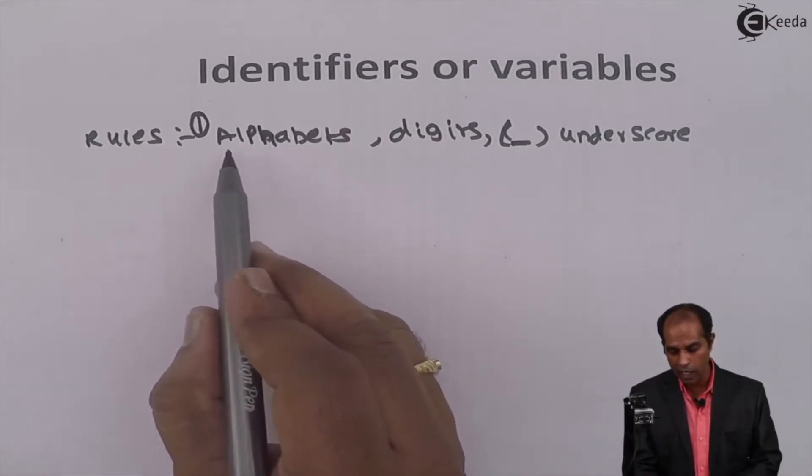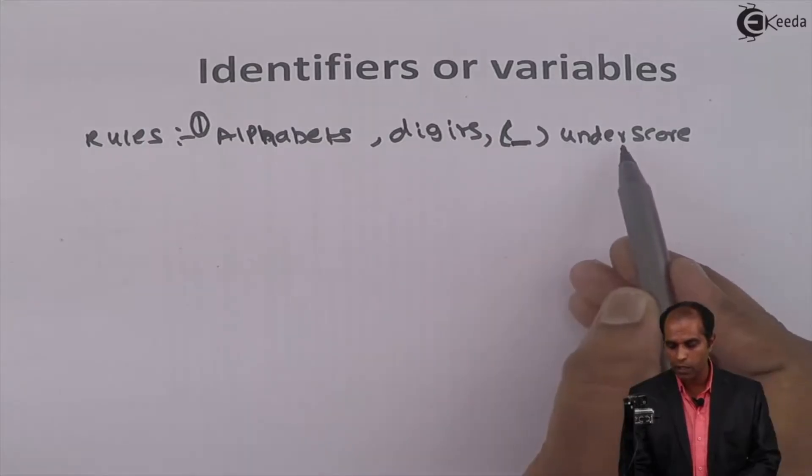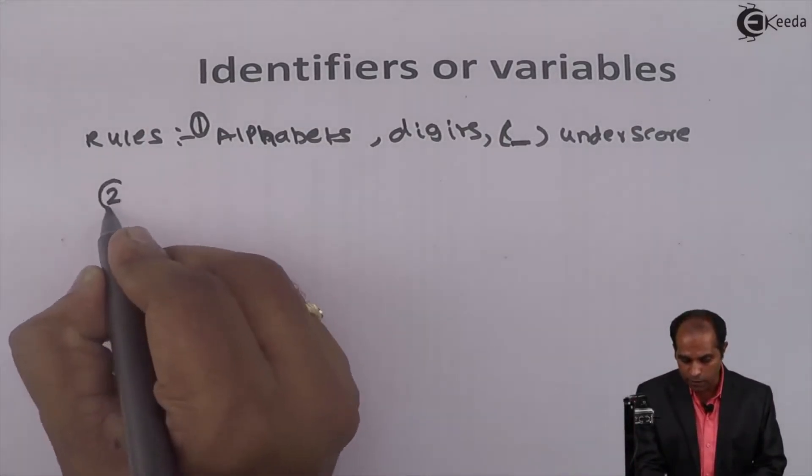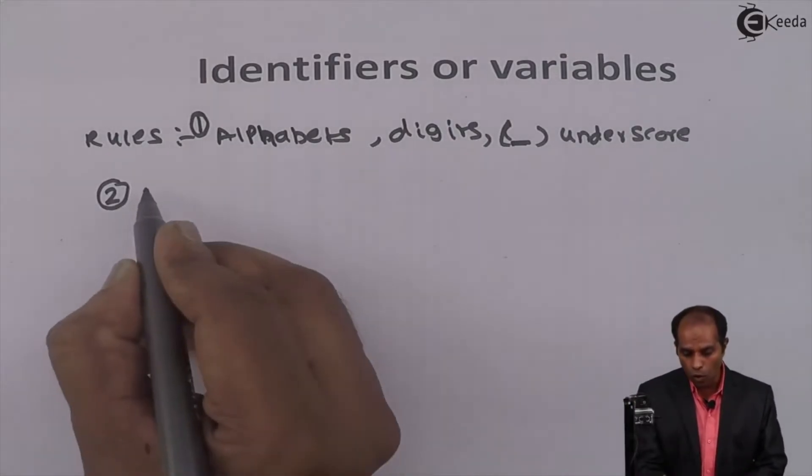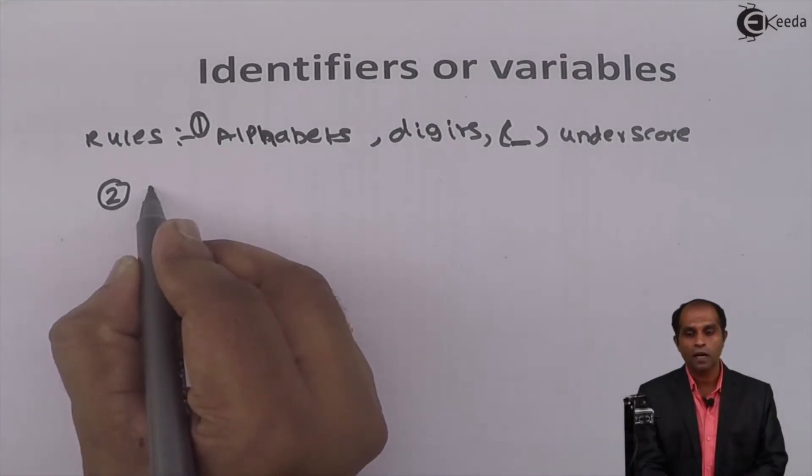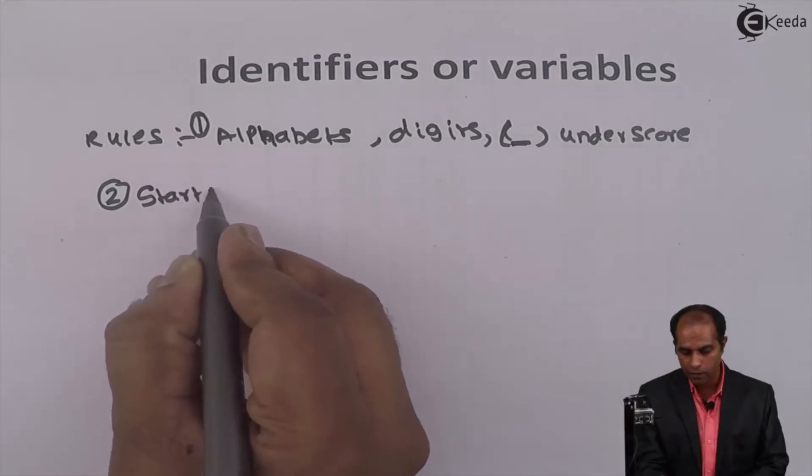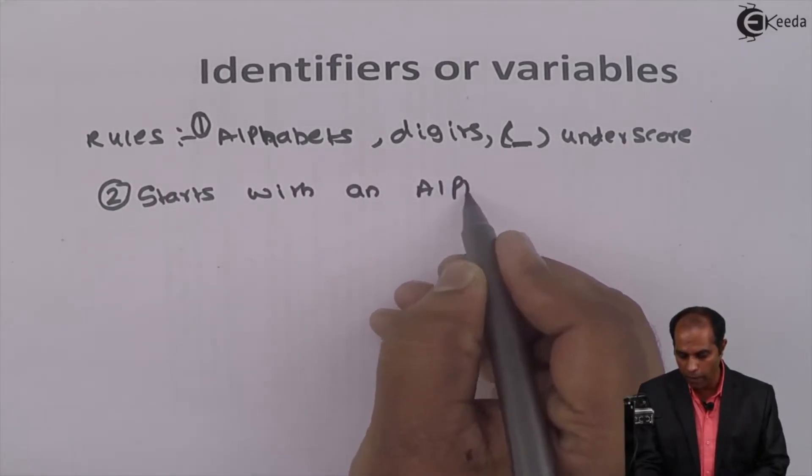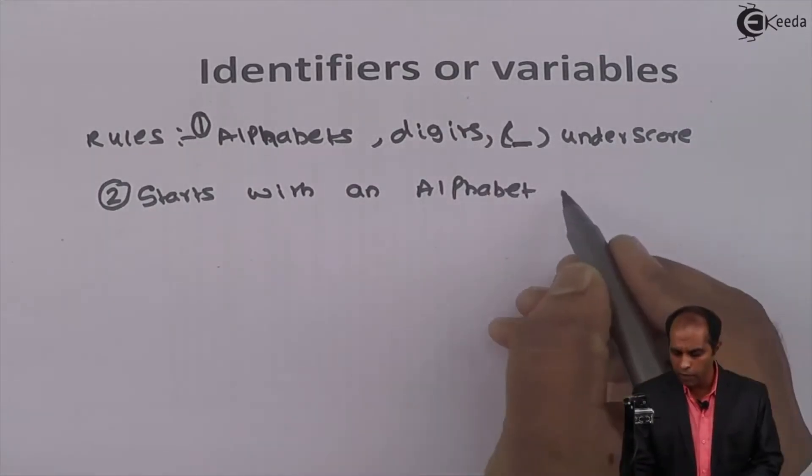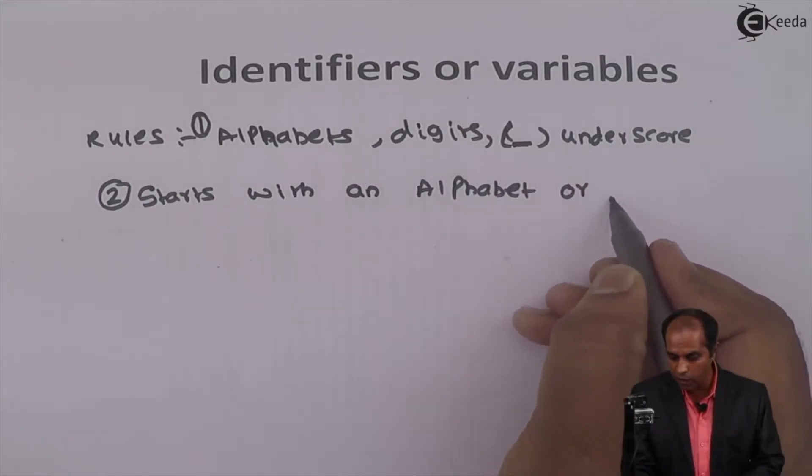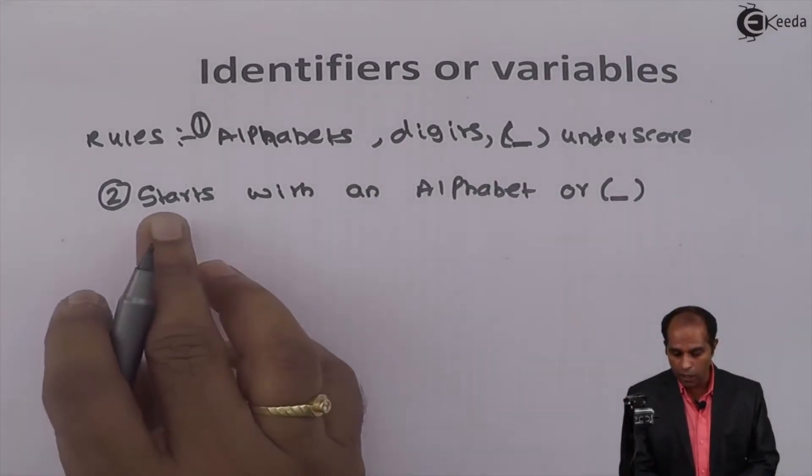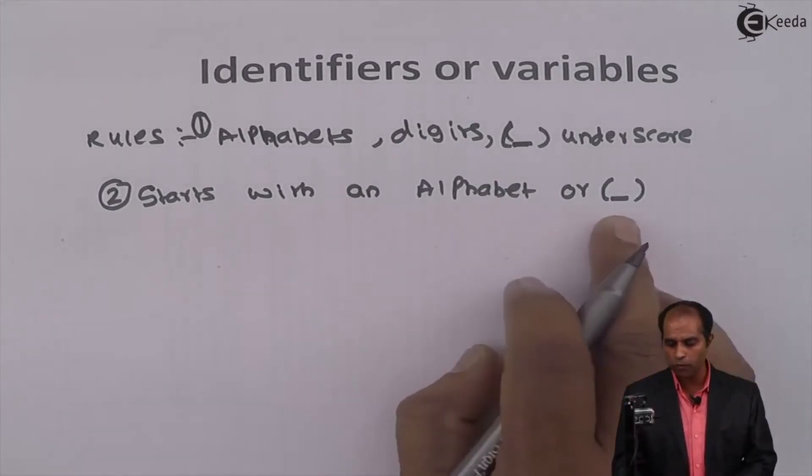The second rule says it should always start with an alphabet. And I can also start with a character called underscore. We can have identifiers beginning with an alphabet or underscore.